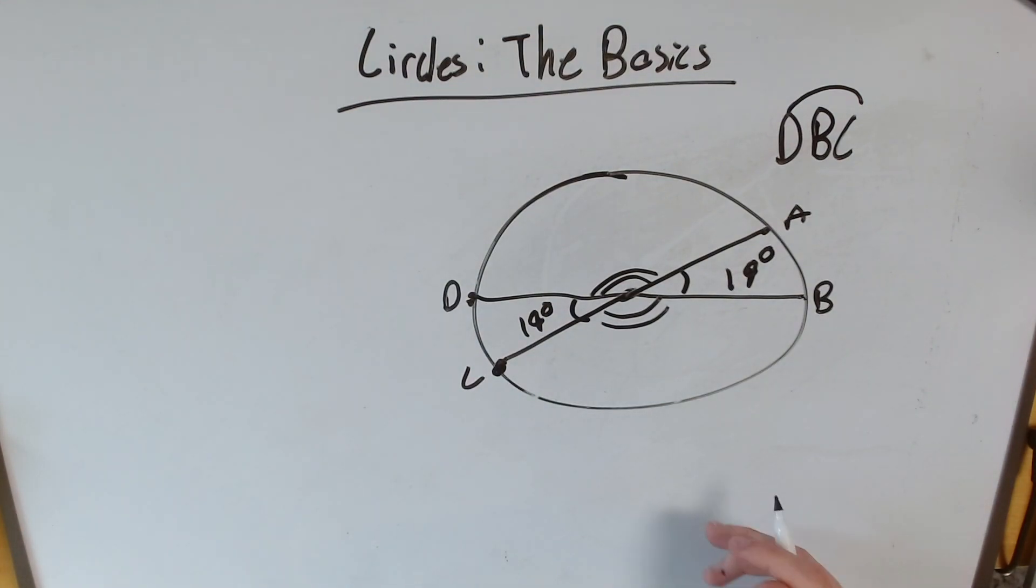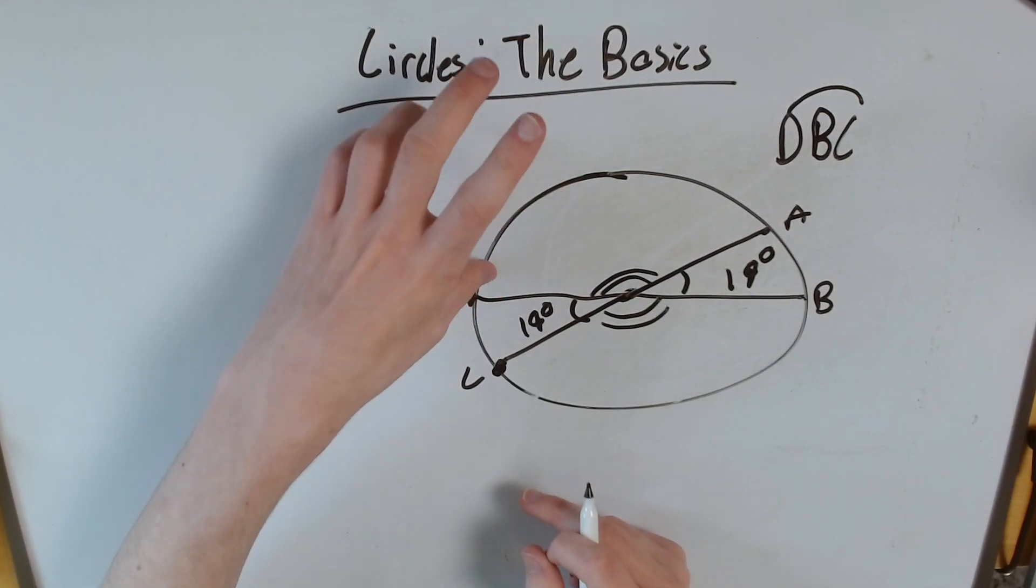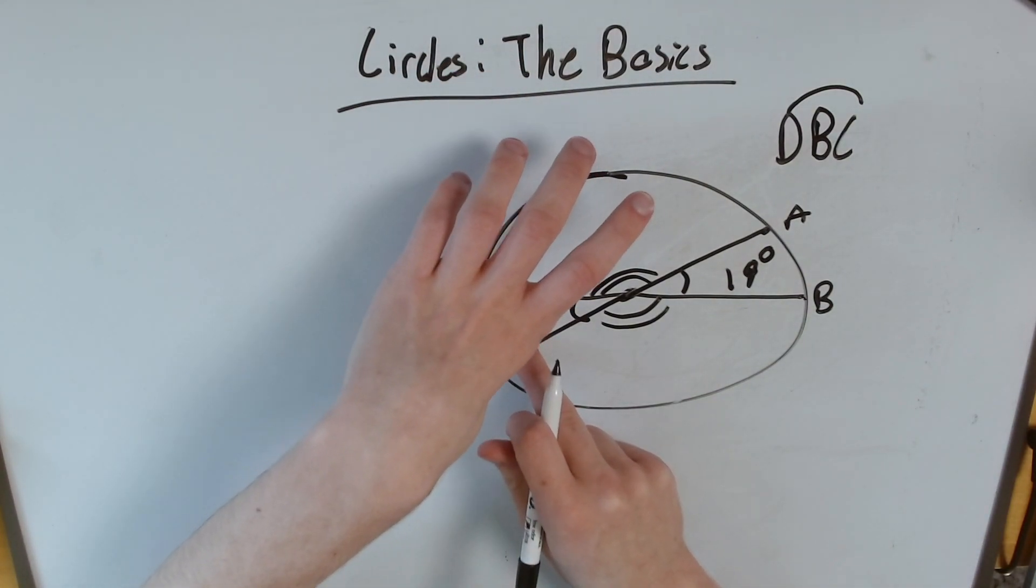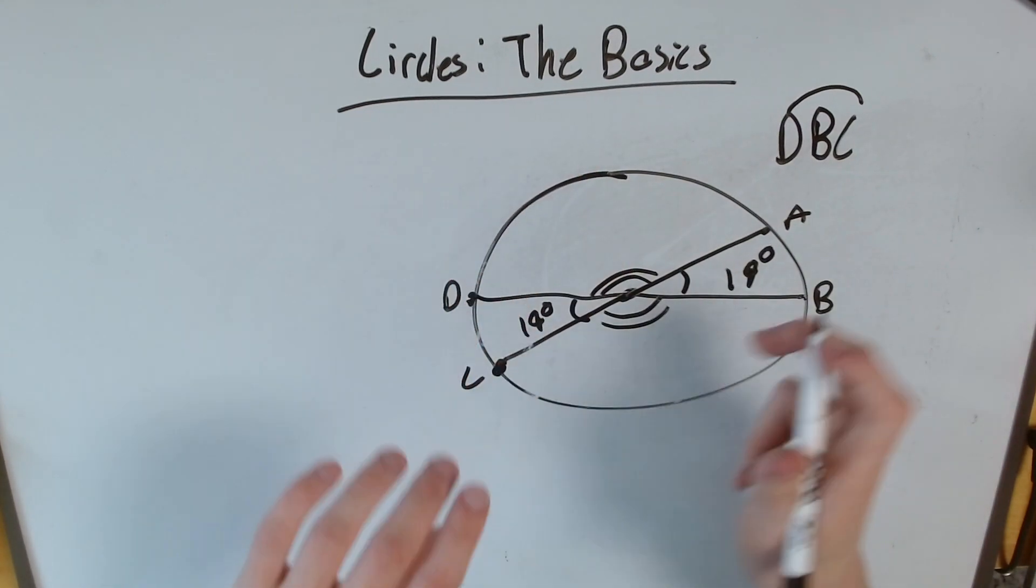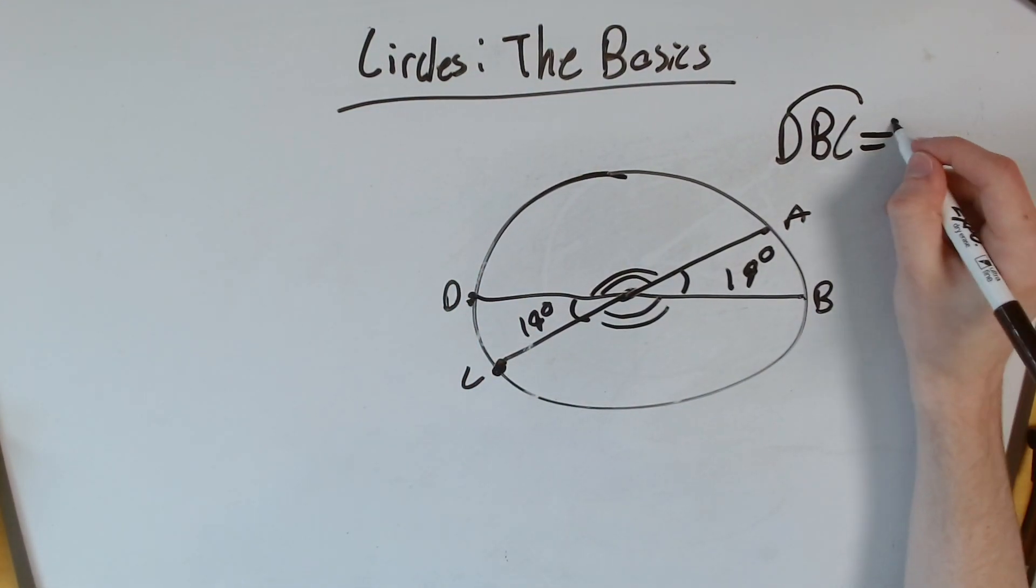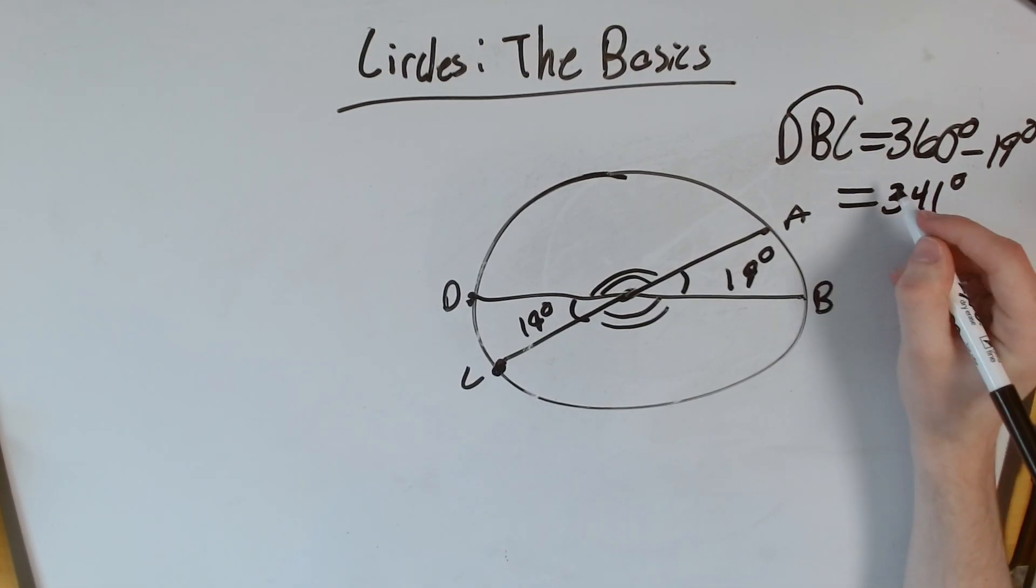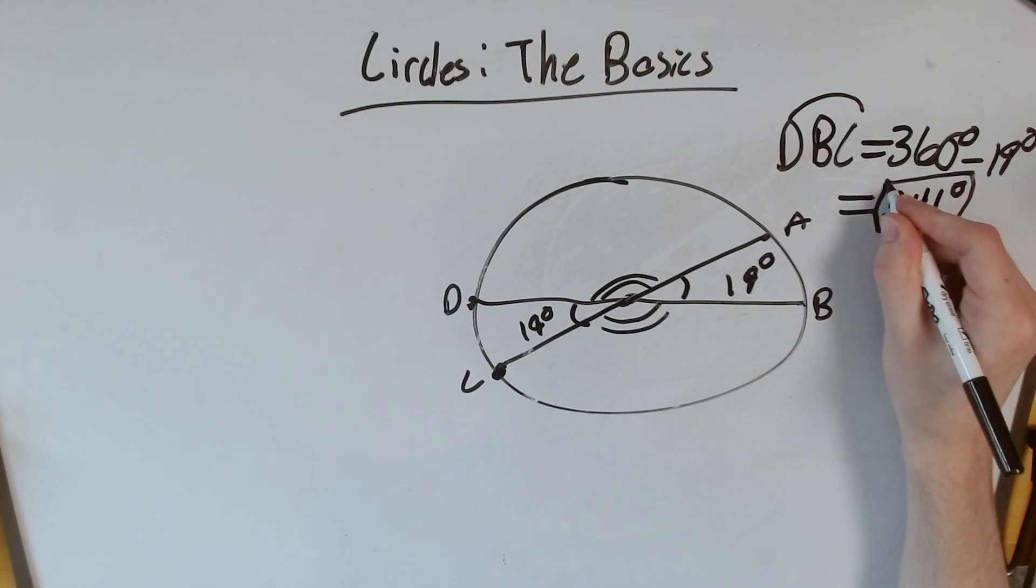But why is that relevant? Well, DBC is the entire circle except this 19 degree portion. So we can say this is equal to the entire circle, or 360 degrees, minus that 19 degree portion. So that means our answer is 341 degrees. That is our final answer.